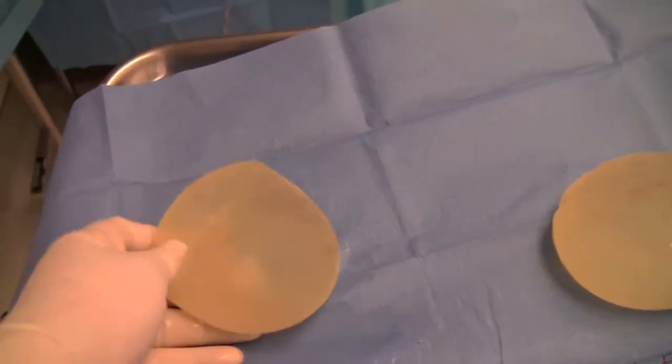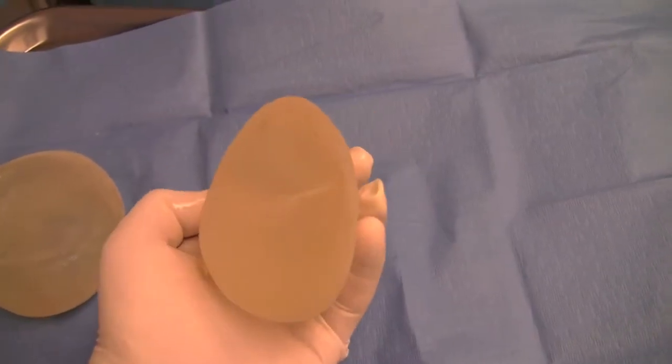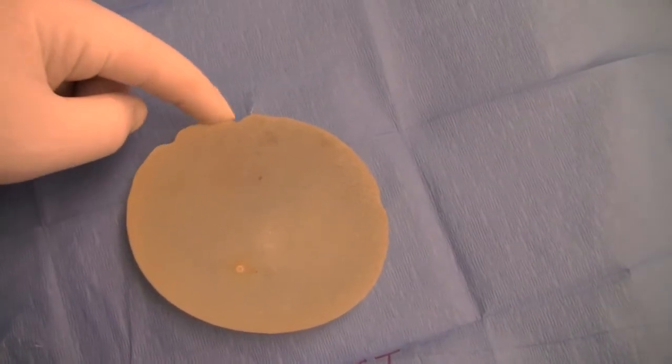So how do you avoid the folds? You over-inflate a saline implant. But as you over-inflate it, look how it starts to get more round like a ball. And if you over-inflate it enough, you start to get stippling around the edges.